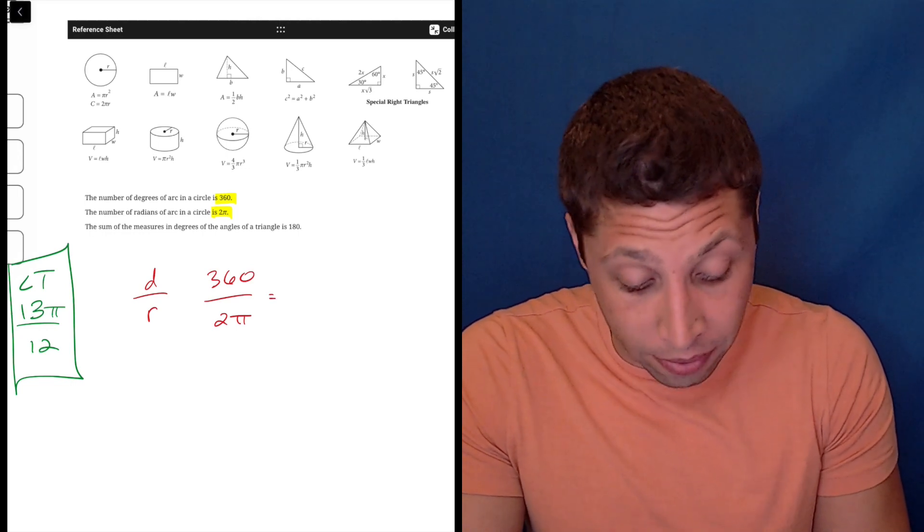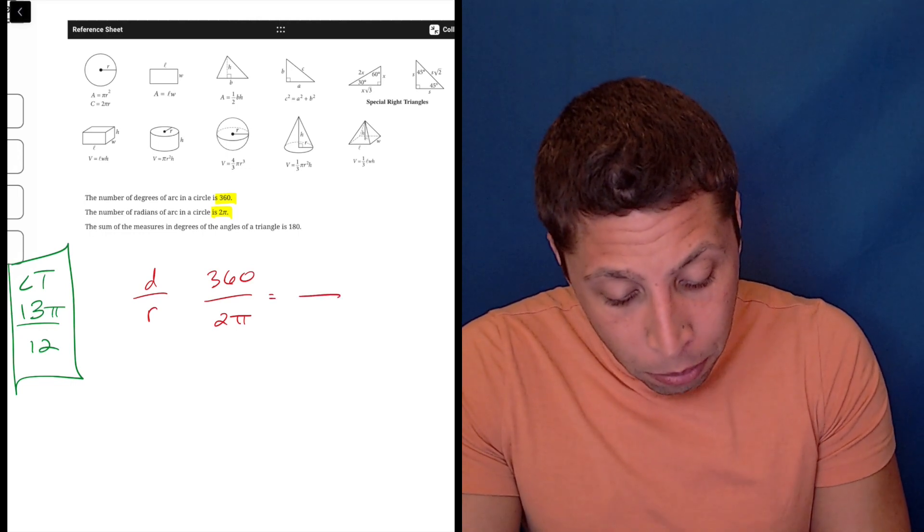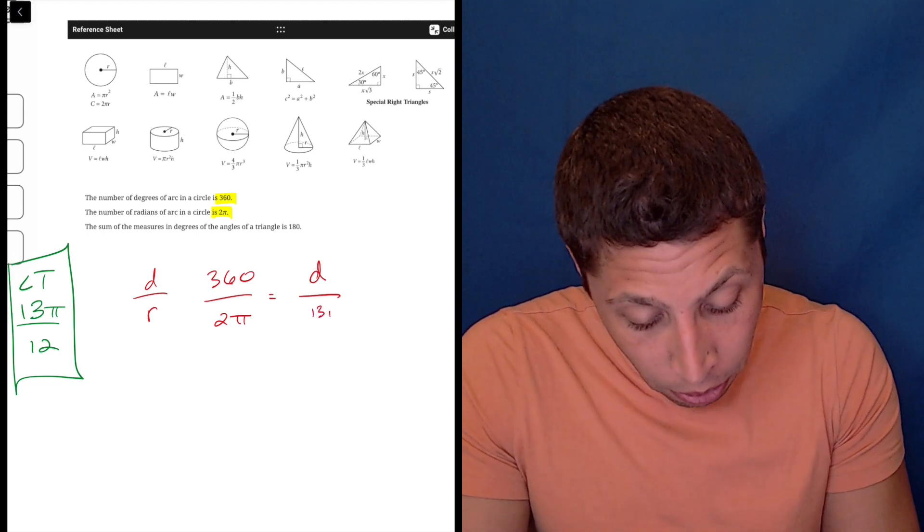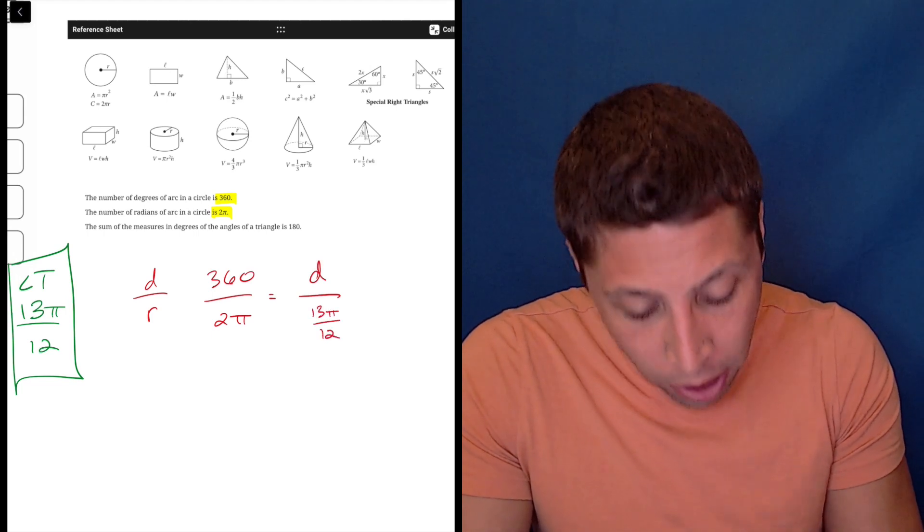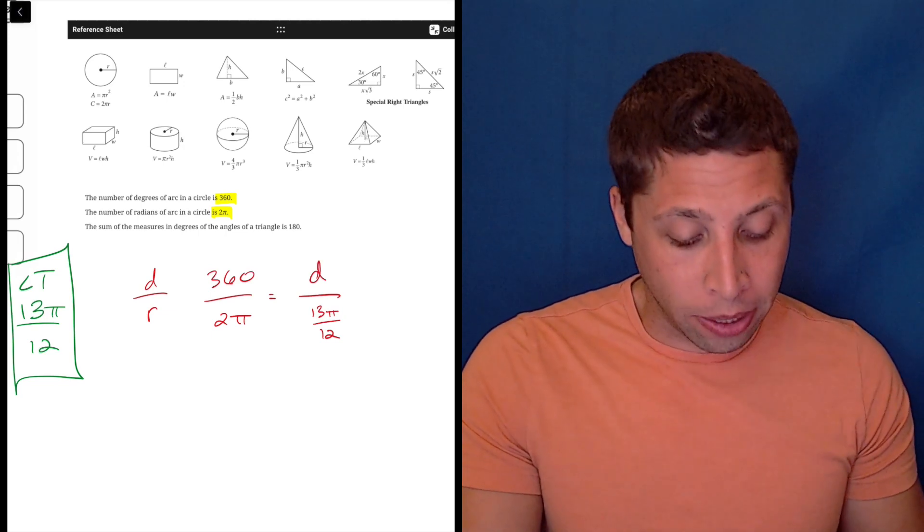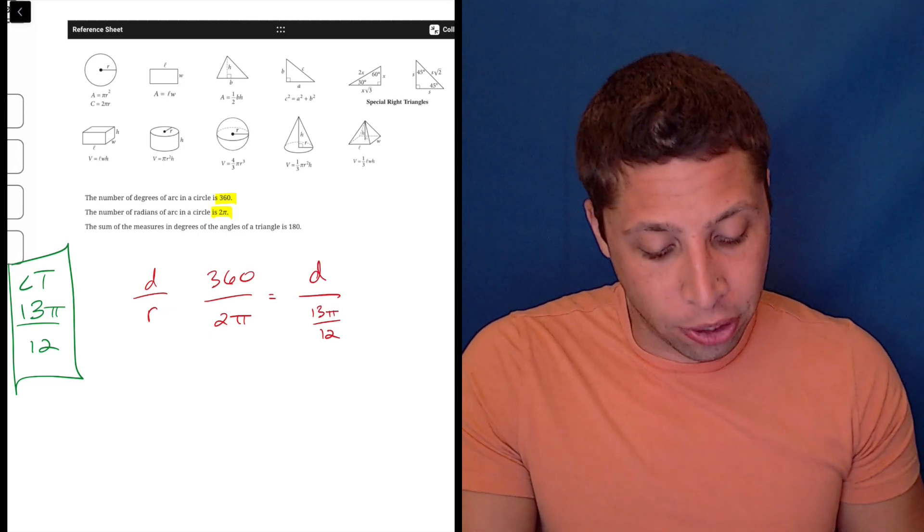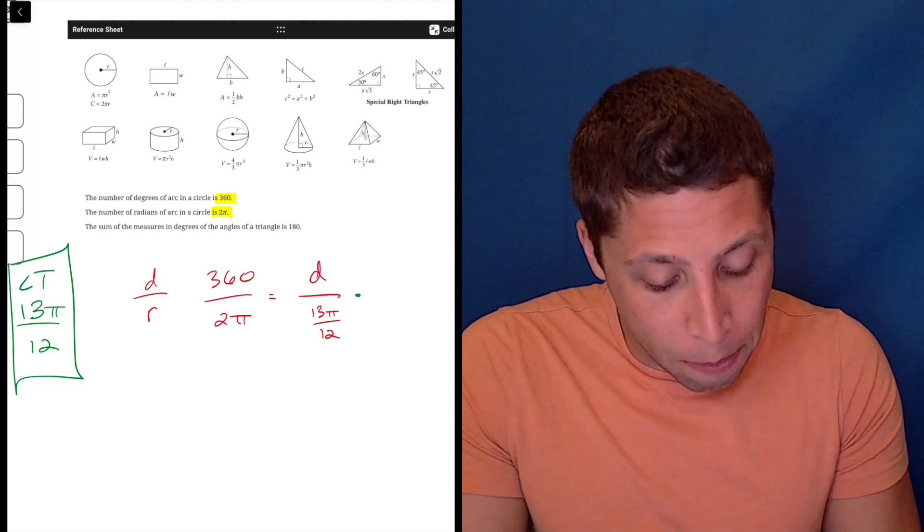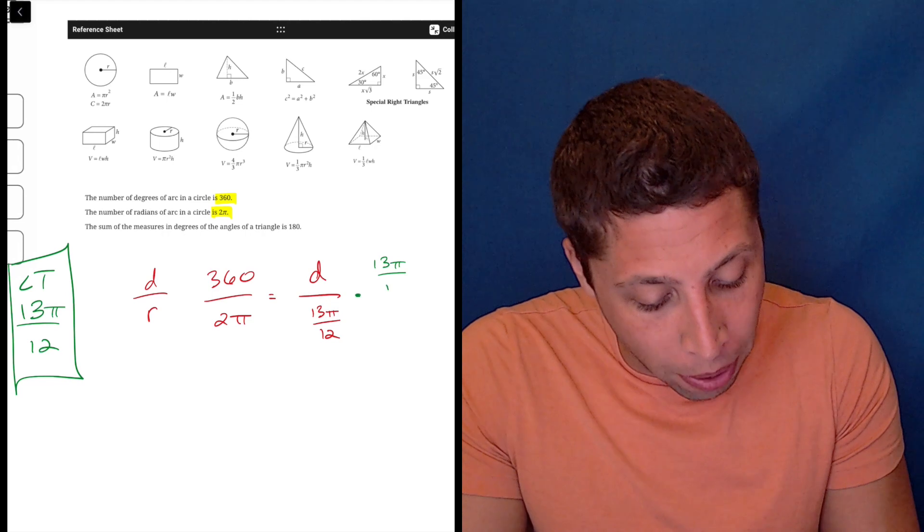So I would say, okay, they told me that 360 degrees is 2π radians. So I'll set that part up. That's just given. And then I don't know the number of degrees that I'm solving for, but I do know 13π/12 is the amount of radians. And it doesn't bother me that it's a fraction because I know how to get rid of fractions.